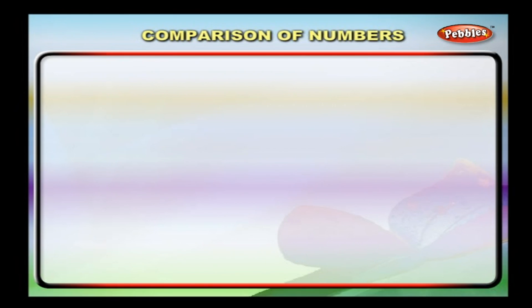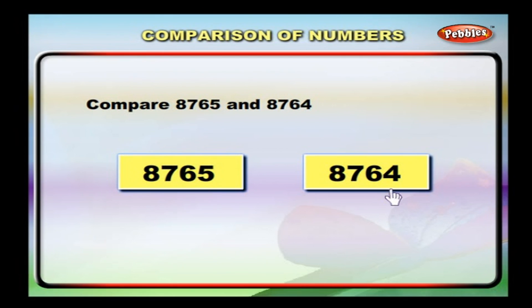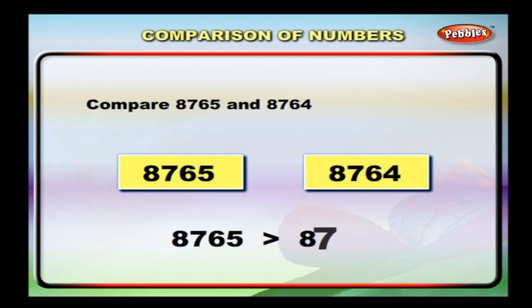Another example: compare 8765 and 8764. Both are four-digit numbers. Both have the same digit in the thousands place — eight. Both have the same digit in the hundreds place — seven. Both have the same digit in the tens place — six. Now, in the ones place, the first number has five and the second has four. So, eight thousand seven hundred and sixty-five is greater than eight thousand seven hundred and sixty-four.